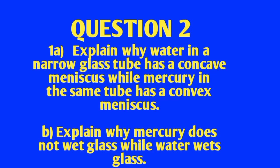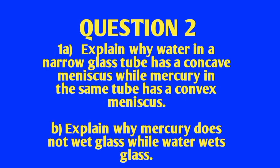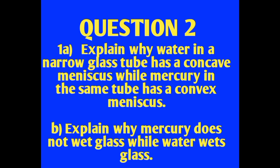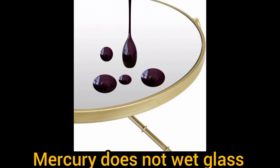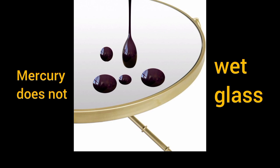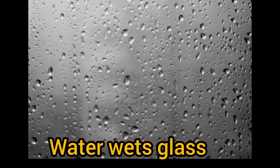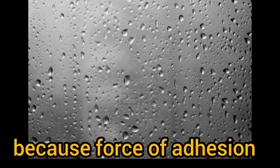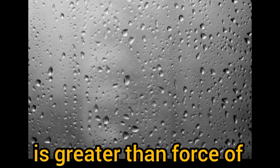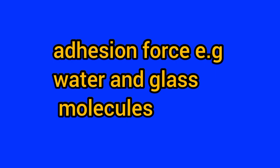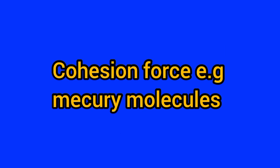This question can also come out as: explain why mercury does not wet glass while water wets glass. Mercury does not wet glass because the force of cohesion of mercury molecules is greater than the force of adhesion of mercury molecules to glass. Water wets glass because the force of adhesion of water molecules to glass is greater than the force of cohesion between water molecules.